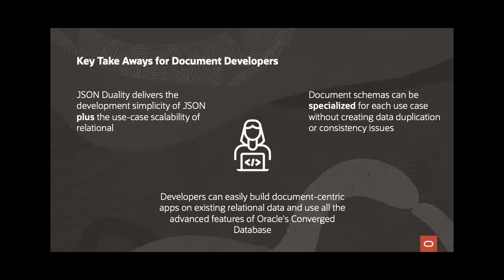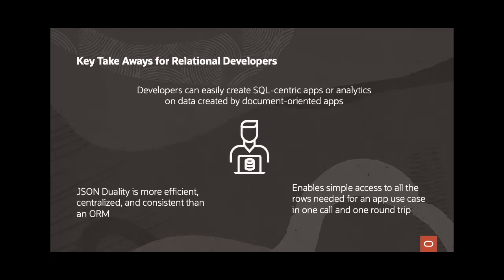The key takeaways for document developers: JSON duality delivers the development simplicity of JSON plus the use case scalability of the relational model. Document schemas can be specialized for each use case without creating data duplication or consistency issues. Developers can easily build document-centric apps on existing relational data and use all the advanced features of Oracle's converged database. For relational developers, developers can easily create SQL-centric applications or analytics on data created by document-oriented apps. JSON duality is more efficient, centralized, and consistent than an object-relational mapping model, and it enables simple access to all rows needed for an app use case in one single call and one round trip.